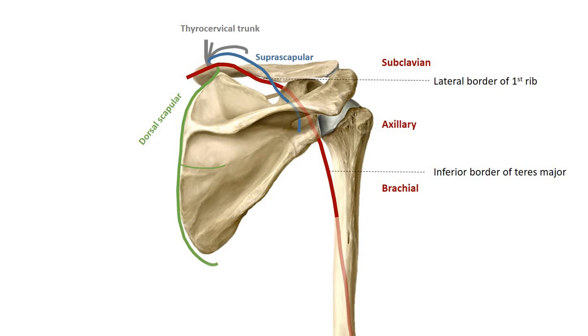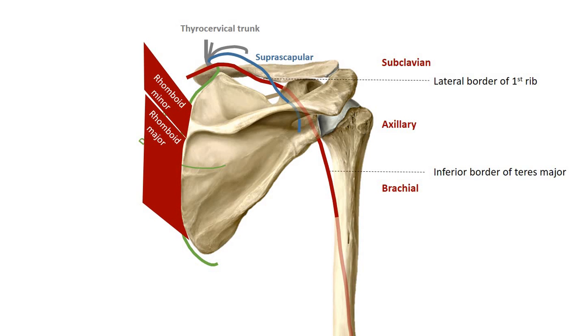Another branch of the subclavian is the dorsal scapular artery. Sometimes this may instead arise from a branch of the thyrocervical trunk. It runs along the medial border of the scapula, deep to the rhomboid minor and rhomboid major.